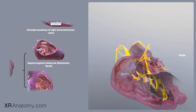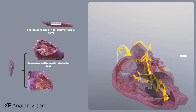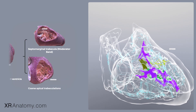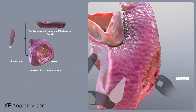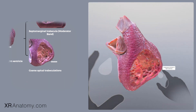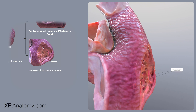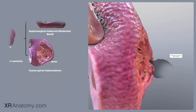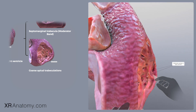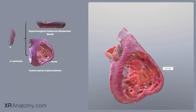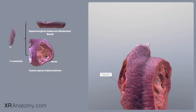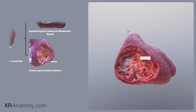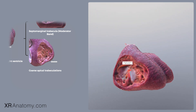Notably, the septomarginal trabecula carries a portion of the cardiac conduction system. Additionally, the right ventricle features coarse apical trabeculations within its trabecular part. These raised muscular bands are more pronounced than those found in the left ventricle, contributing to the right ventricle's ability to pump blood efficiently through the pulmonary circuit.